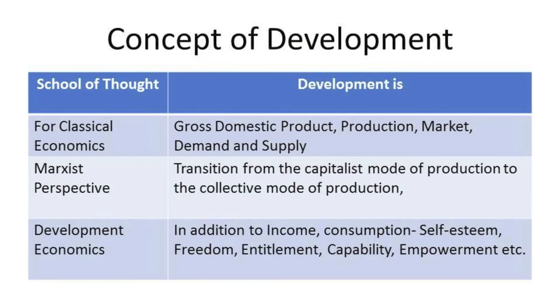The concept of development is a bit more complicated and definitions differ according to different schools of thought. Classical economics focused more on production and growth and looked into issues of demand, supply, market, prices, etc. Indicators such as gross domestic product (GDP) were generally perceived as indicators of development. The Marxist school of thought laid emphasis on the transition from the capitalist mode of production to collective mode of production, stressing the distributive aspects and the role of labor masses in managing the economy. The development economics approaches of scholars like Michael Todaro and Amartya Sen saw development not as a mere economic phenomenon but as a multidimensional socio-economic dynamic process.